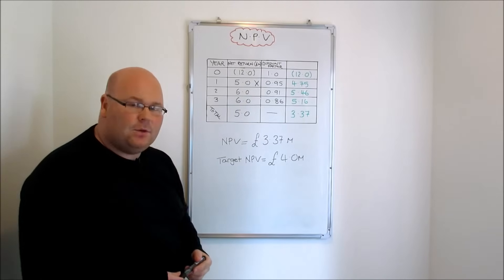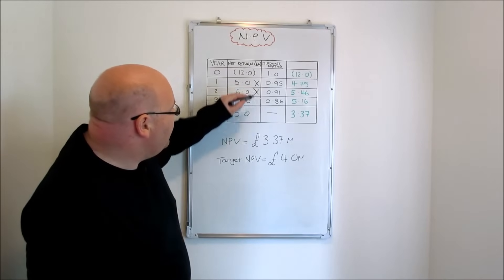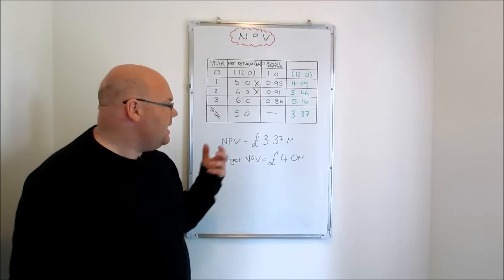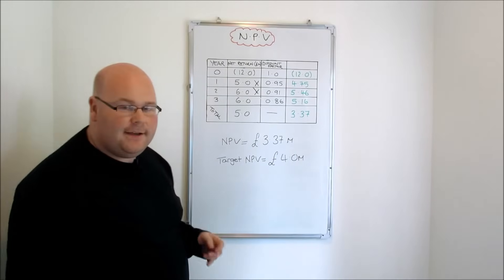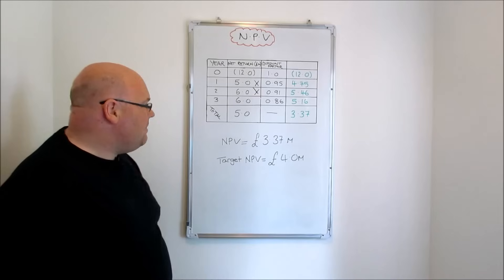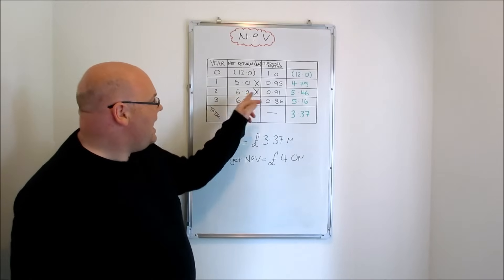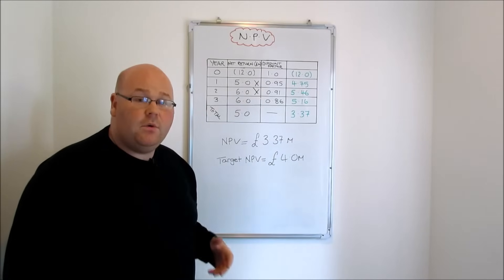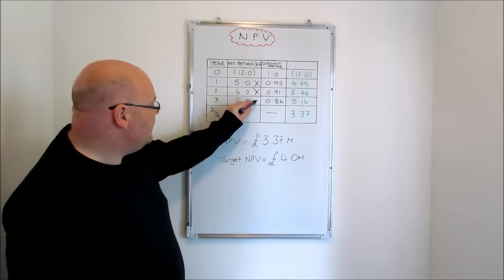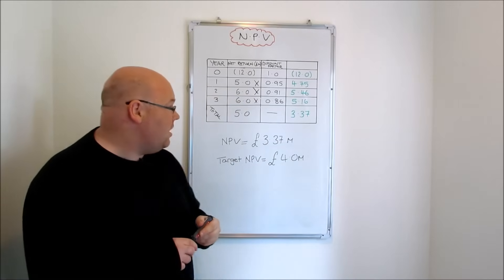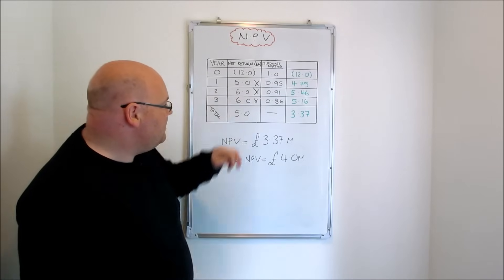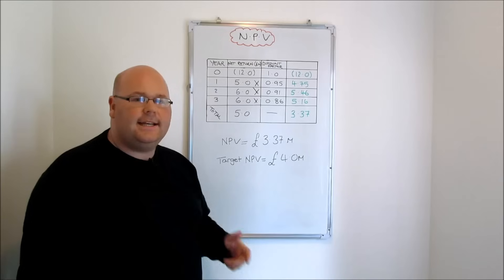For year two, we take the forecasted 6 million pounds and multiply it by a discount factor of 0.91. This is a bigger discount because waiting 24 months is even less valuable than waiting 12 months. That recalibrates the 6 million to 5.46 million in today's money. For year three, we've got 6 million again but discount it even more, multiplying by 0.86. Six million times 0.86 comes out as 5.16 million pounds.